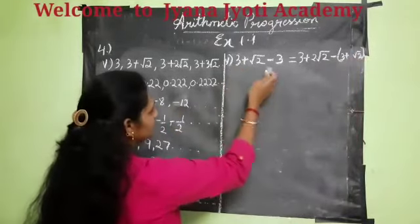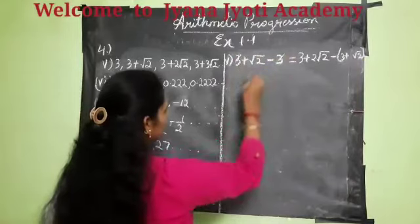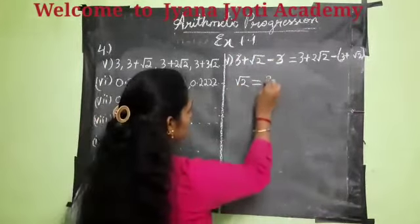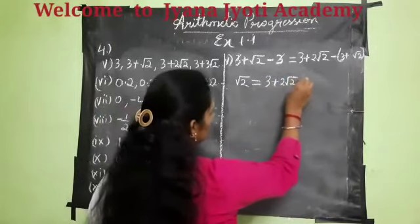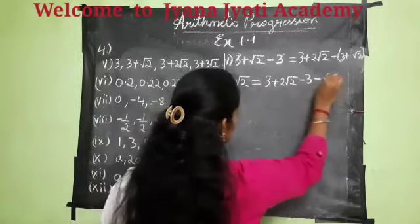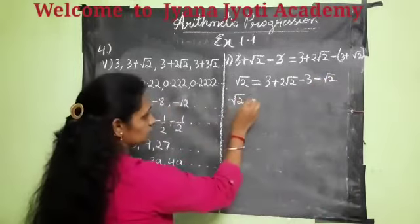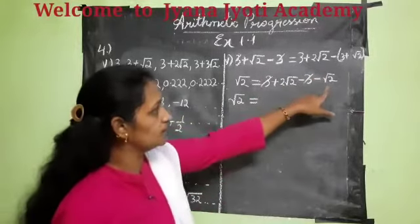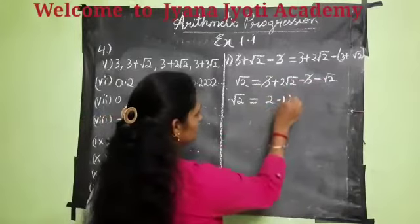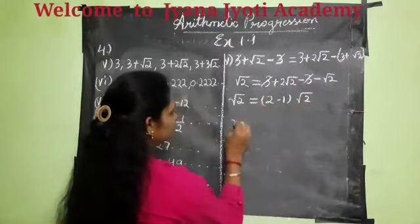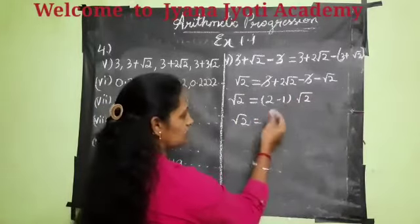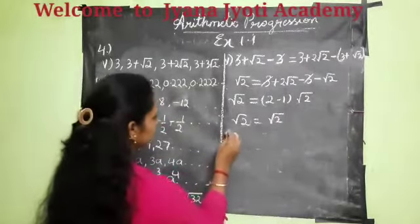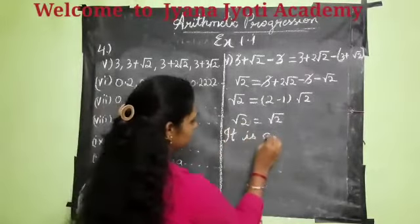So here 3 and 3 minus 3 gets cancelled, so I can write it directly as root 2. On the RHS, let us open the bracket: it will be 3 plus 2 root 2 minus 3 minus root 2. So here 3 minus 3 gets cancelled, and 2 root 2 minus root 2 means (2 minus 1) root 2, which equals root 2. Therefore the given sequence is an AP.